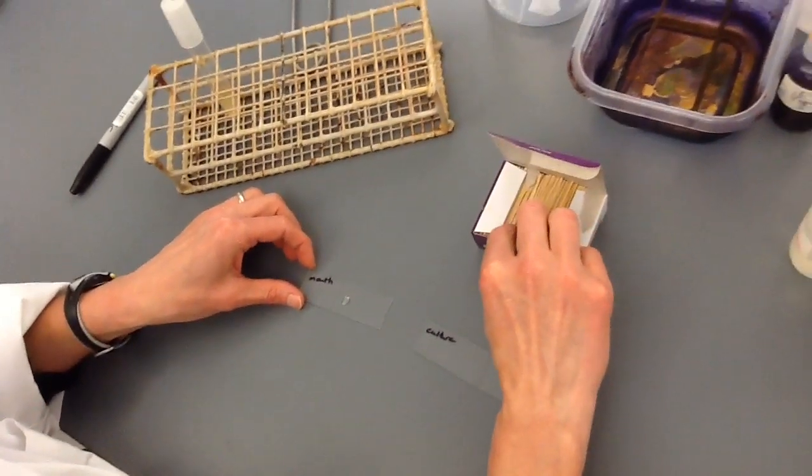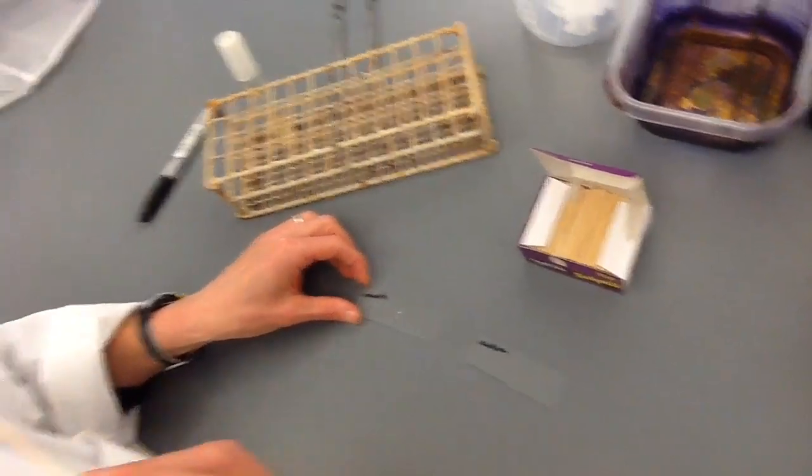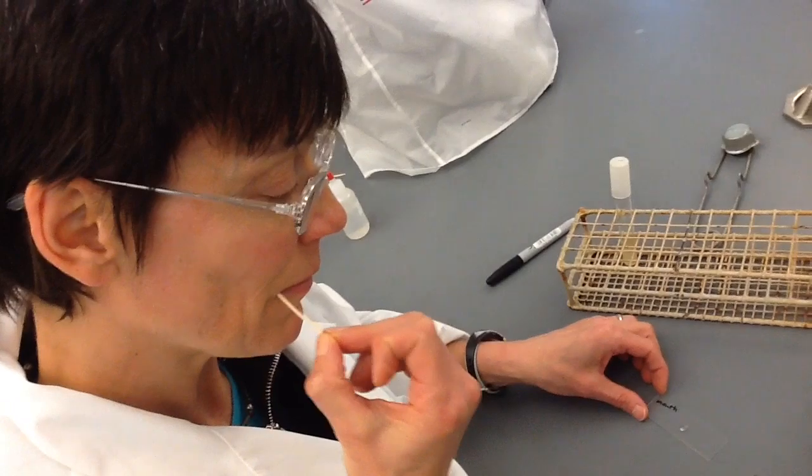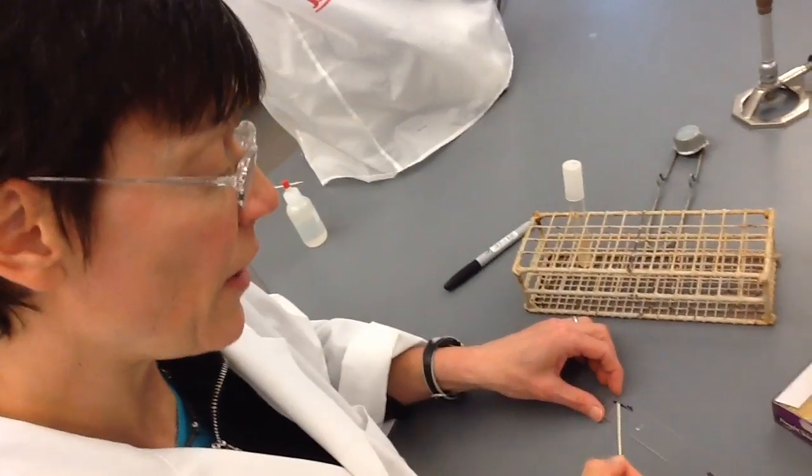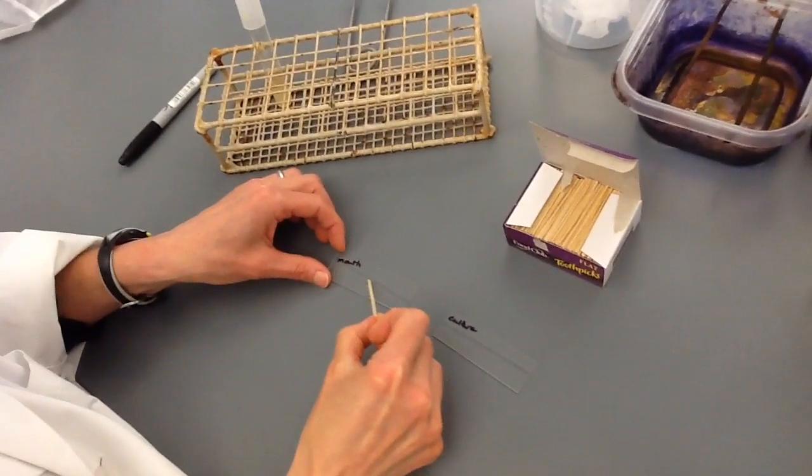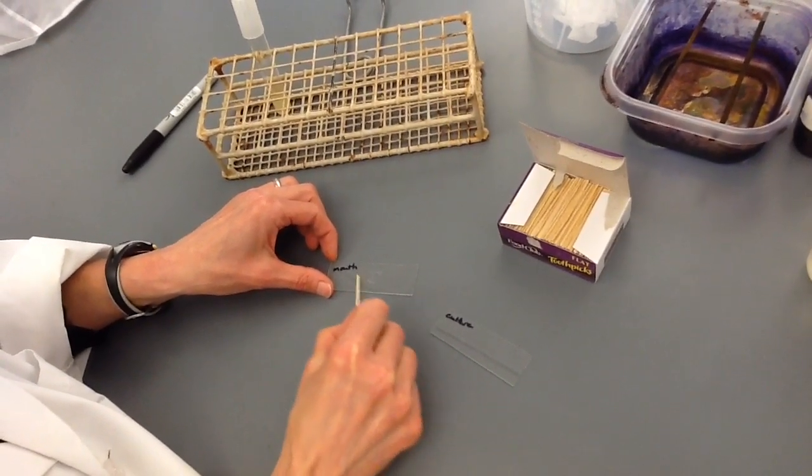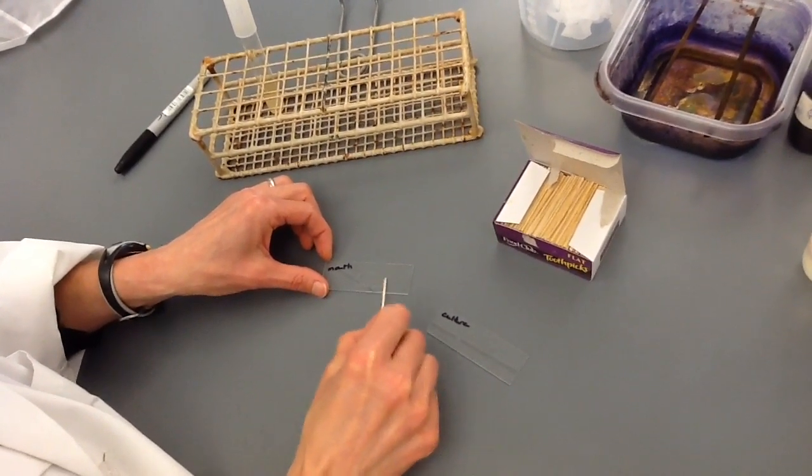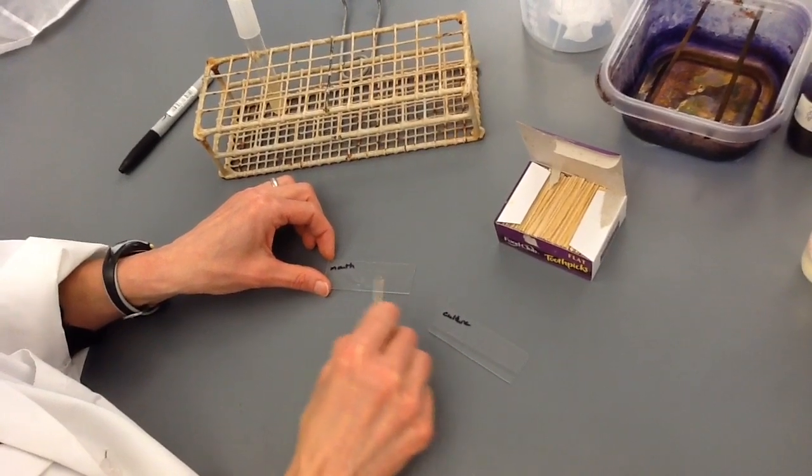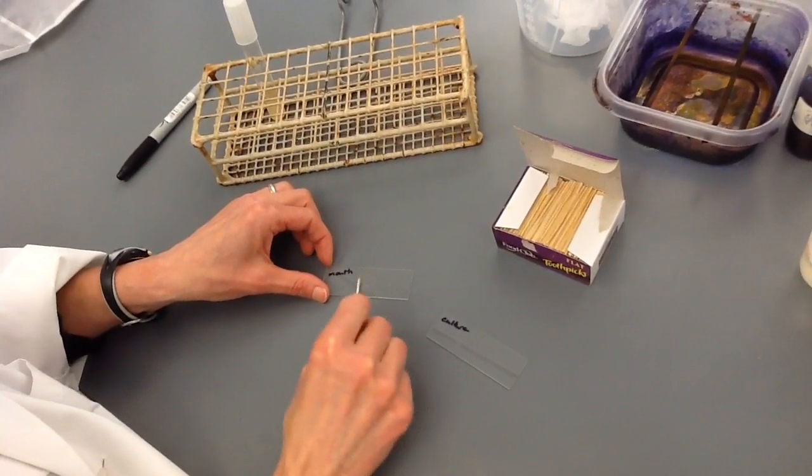Then you take a toothpick and you actually scrape along the gum line of your mouth and mix the sample in using the toothpick to spread the sample across the slide to the extent possible so that it doesn't take too long to dry.